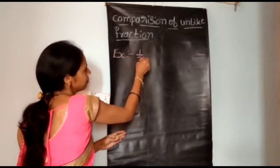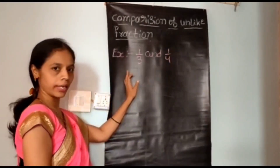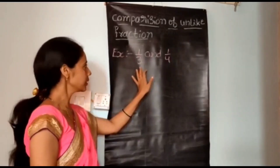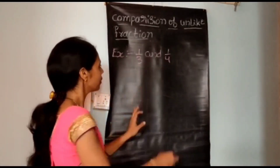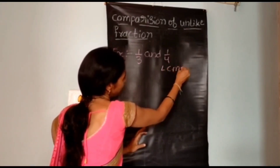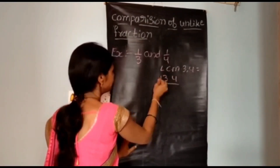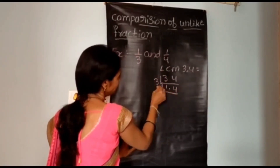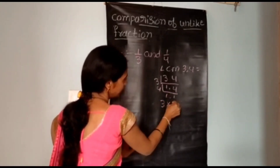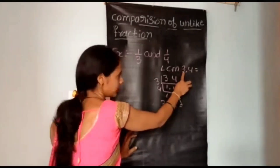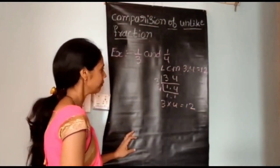Take another example: 1/3 and 1/4 are two unlike fractions because their denominators are different. First, convert these unlike fractions into like fractions by taking the LCM of their denominators. LCM of 3 and 4: multiply 3 into 4. The LCM of 3 and 4 is 12.